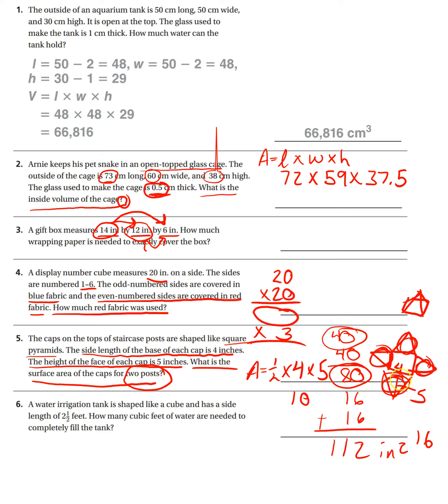So 40 for the area of the four triangles. There's two posts, so another 40. And then the bottom is 4 by 4, which is 16, and there's two posts. So another 16. Add that all up, and we get 112 inches squared.